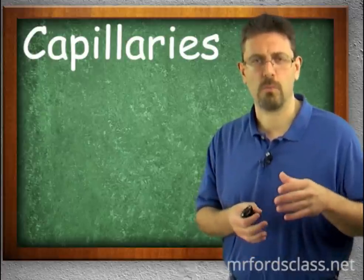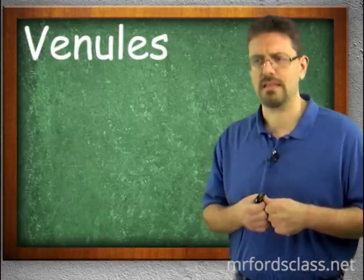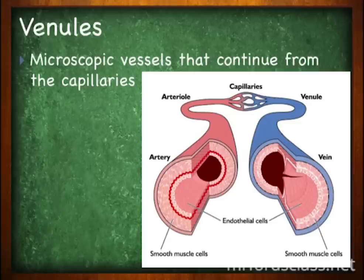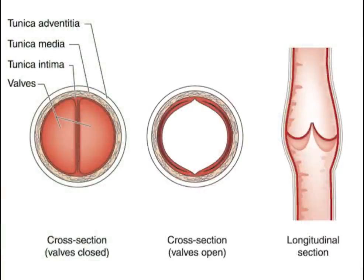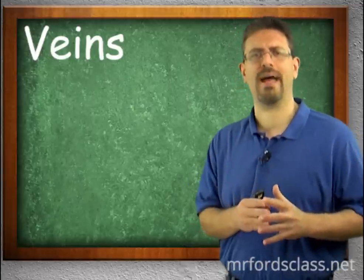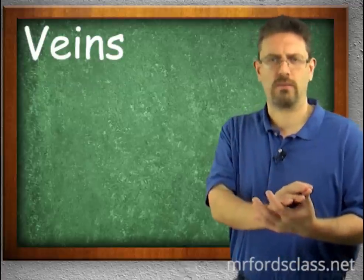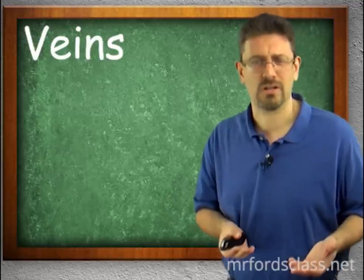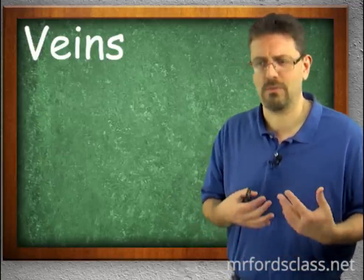From the capillaries we go into very small veins called venules — the little roads from houses leading to a highway system. Venules are microscopic vessels that continue from the capillaries and start to feed together, forming veins. Veins are composed of three layers, but the middle layer is less developed than in arteries. Veins have thinner walls with less smooth muscle and elastic tissue.